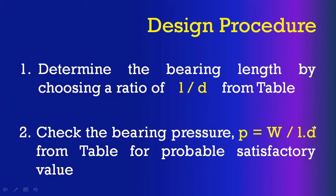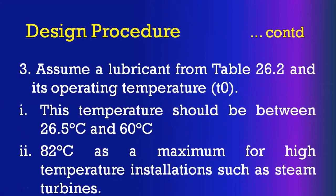Bearing load divided by L × D gives the bearing pressure. Now you have to compare this calculated bearing pressure value with the standard bearing pressure available in the data book for the given application. If the calculated bearing pressure is less than the data book value, then the design is safe as far as bearing pressure is concerned, and the selected L/D ratio is correct.